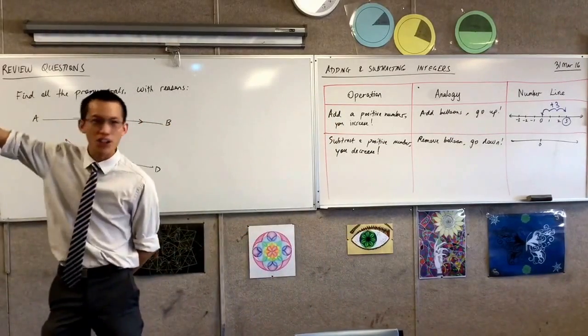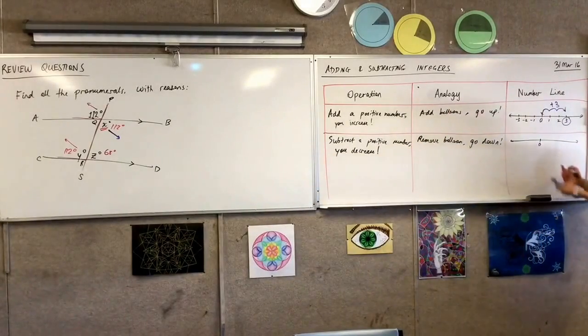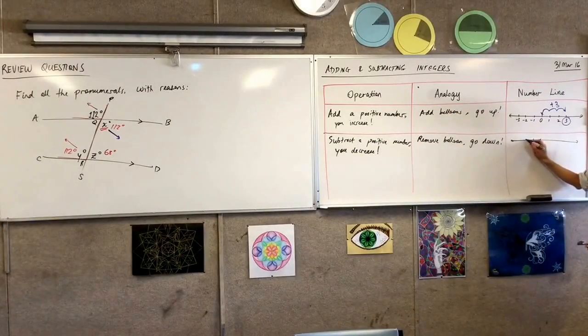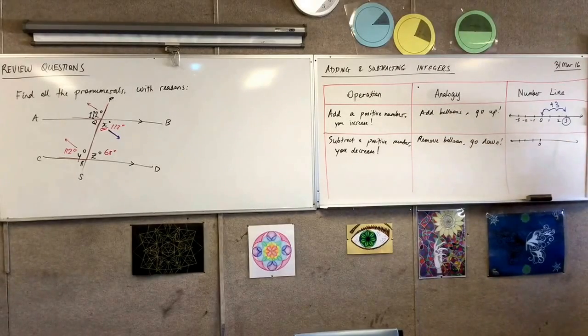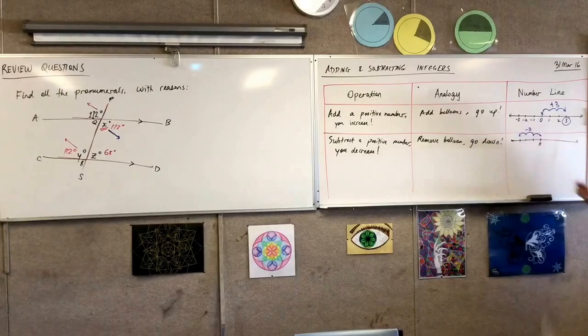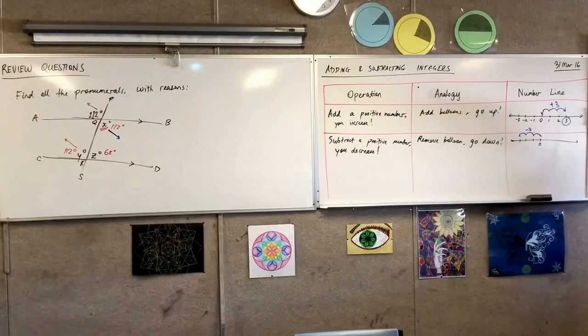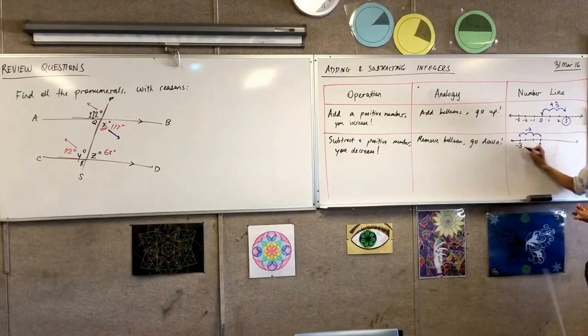I'm going to go to the left. Left and down, they're kind of synonymous in this context. So I'm going to go one, two, three, to the left. So you can see what this subtraction does for us. One, two, three. I'm taking away three. I'm subtracting three. And that lands me on negative three.